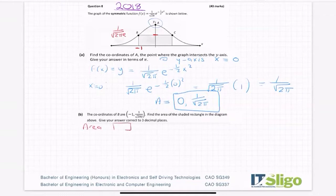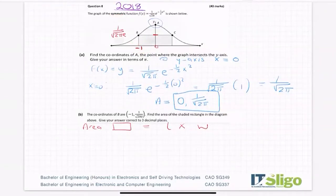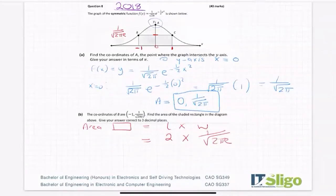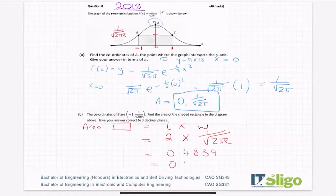Area of a rectangle is length by width. So the length of that — well, if that's zero and that's minus 1, and this is symmetrical. So B is a reflection of C, meaning that must be plus 1. So I would say the length of my rectangle is 2, from minus 1 to 1. And then the height is how high we came up on the y-axis, so it's 1 over root 2πe. If I put that into my calculator — give your answer correct to three decimal places — I'm getting 0.4839 for that. Three decimal places: 0.484.